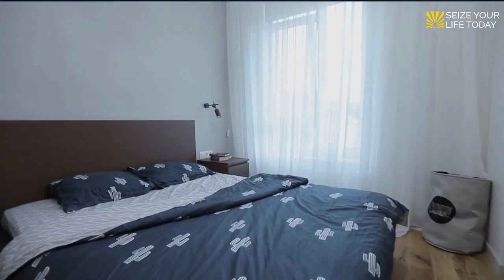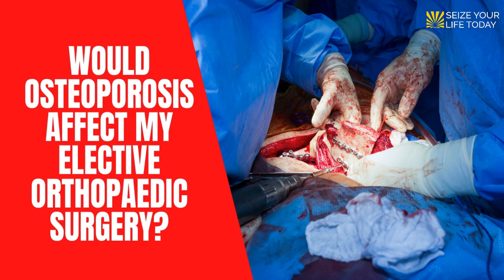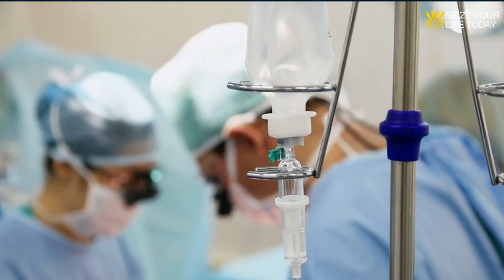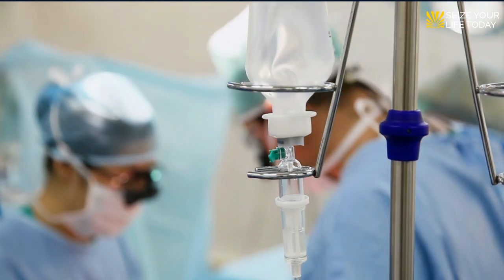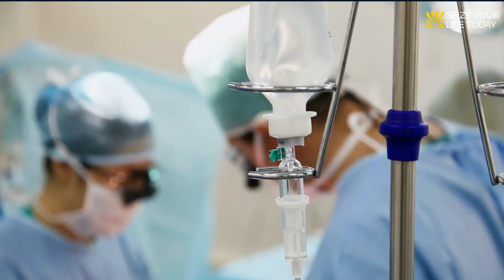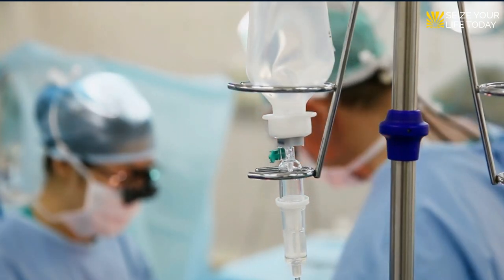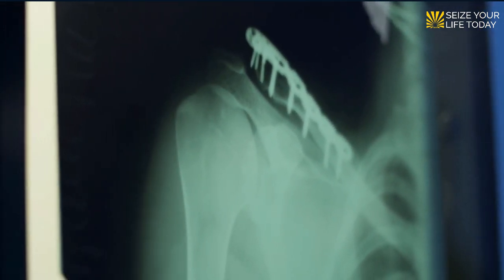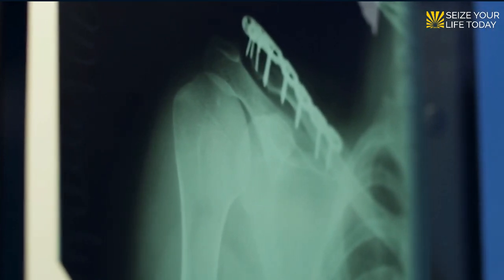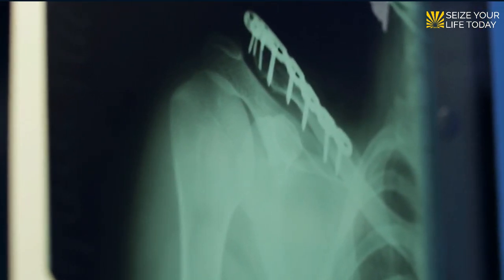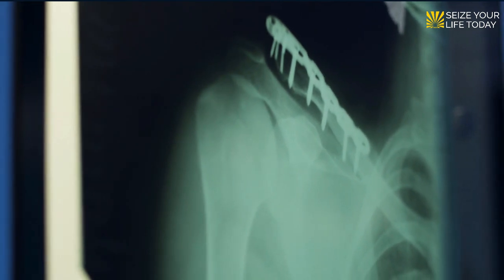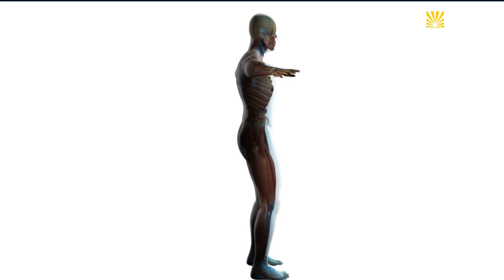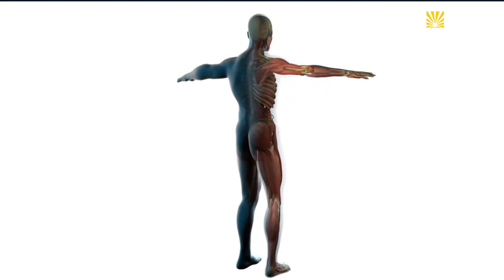Would osteoporosis affect elective orthopedic surgery? Yes — even if you've never had a fracture before, your elective joint replacement surgery will be affected if you have osteoporosis. According to some research, if you have a shoulder arthroplasty, your odds of suffering a periprosthetic fracture (a fracture around the implant) within the first two years are higher than if you don't have osteoporosis. Similar evidence supports this for lower extremity arthroplasty — total hip and total knee replacements.